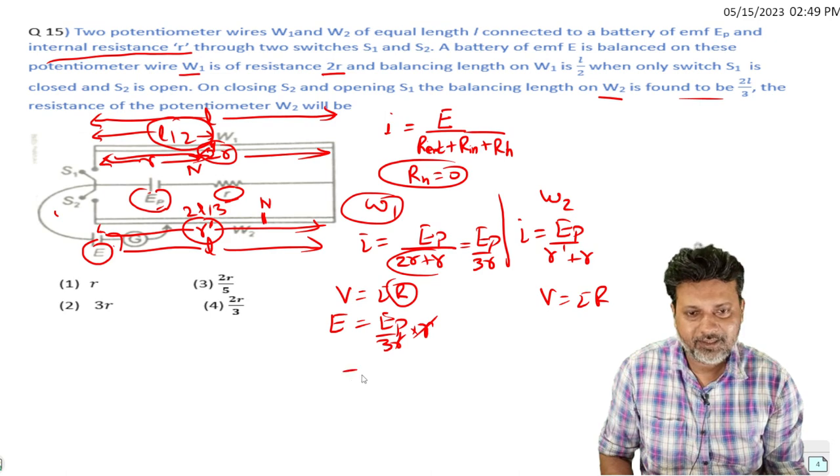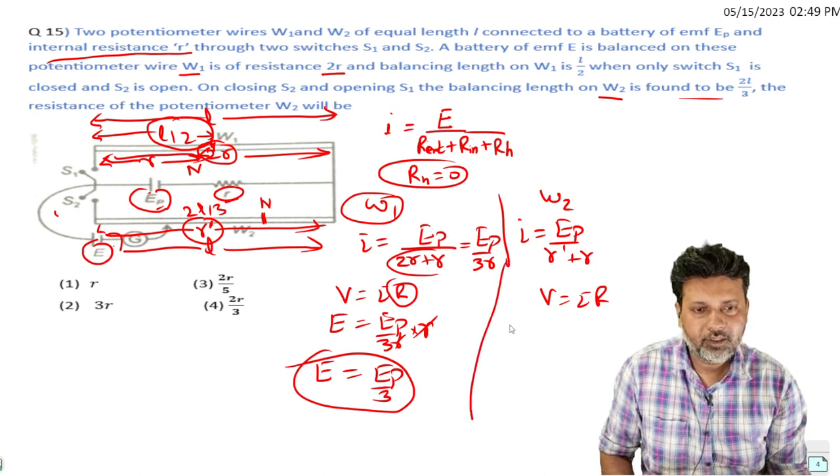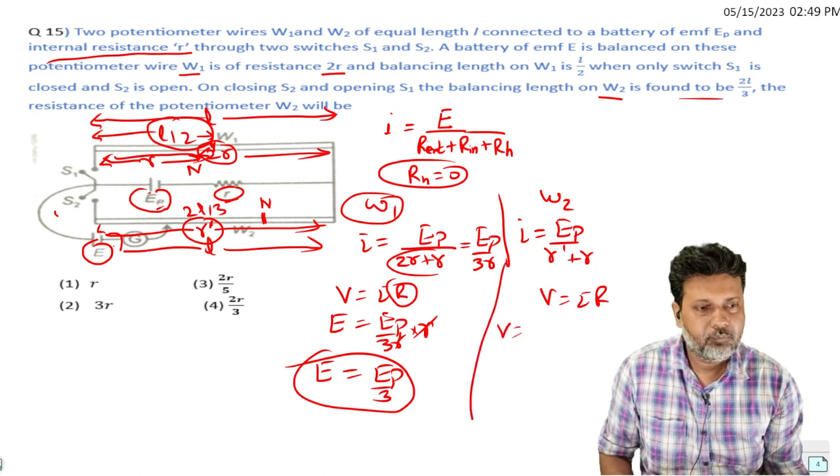This gives us E_p upon 3r times r equals E_p upon 3.